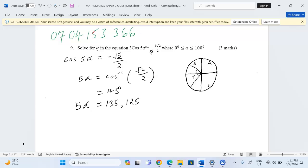And that is 225, sorry. So 45 in the second quadrant is 135. 45 in the third quadrant is equivalent to 225.